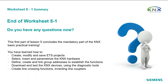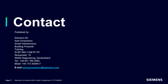End of worksheet 5-1. This first part of Lesson 5 concludes the mandatory part of the KNX basic practical training. You have learned how to: create, modify and save ETS projects; select, insert and parametrize KNX hardware; define, create and link group addresses to establish functions; download and test KNX devices using the diagnostic tools; and create line crossing functions using line couplers. You may now proceed to the further tasks in Worksheets 4 and 5 Part 2. See you!